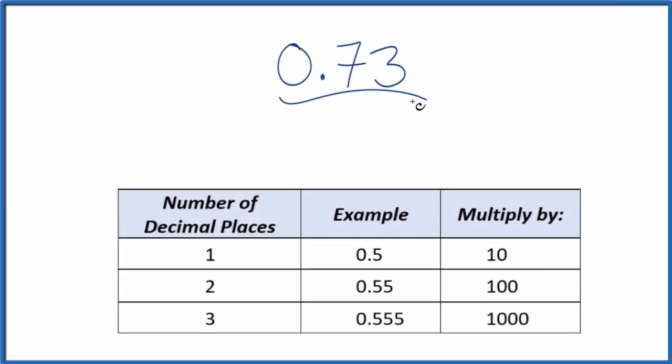Let's write the decimal 0.73 as a fraction. So let's put this as 0.73 over 1. Since we're just dividing by 1, it's still equal to 0.73, but now it's starting to look like a fraction.